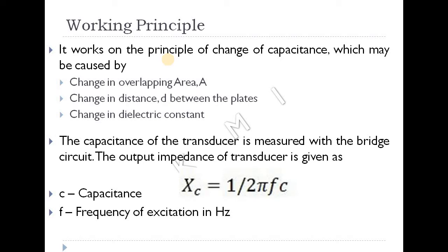The three variables are: area, distance, and dielectric constant. The dielectric medium can change from air to liquid, and the distance between the two plates can also be varied, to change the overall capacitance.